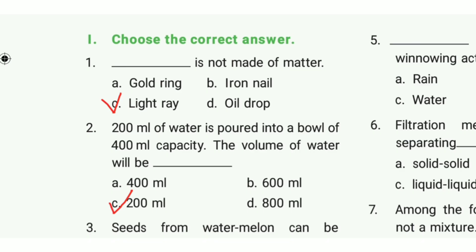Second one: 200 ml of water is poured into a bowl of 400 ml capacity. The volume of water will be? The answer is option C, 200 ml.